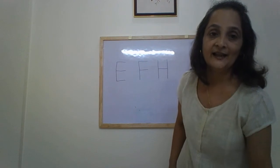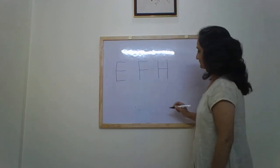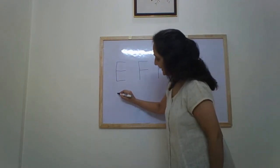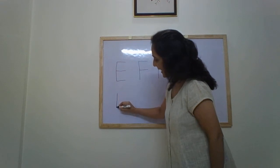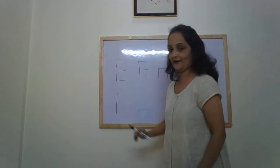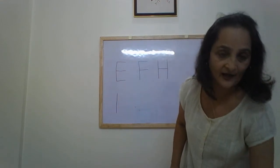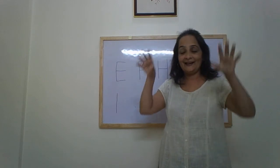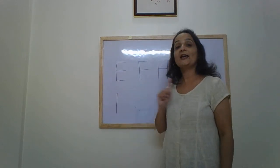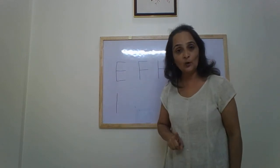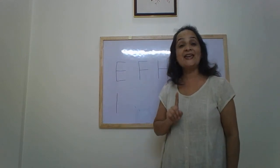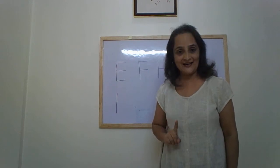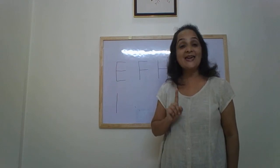The next letter is a standing line — letter I. I makes the sound I. I for igloo, India, idly, ink.